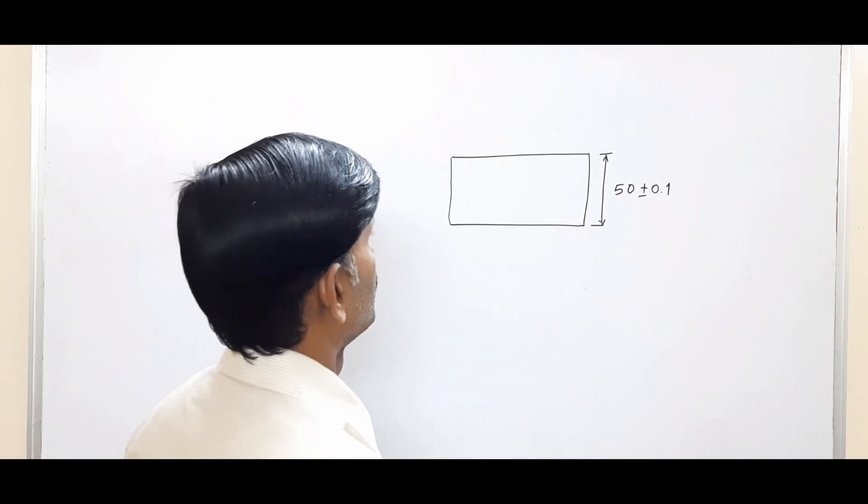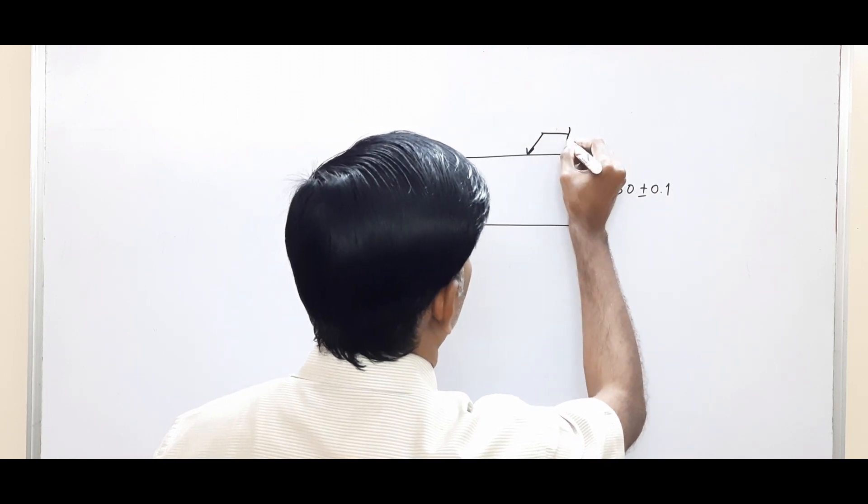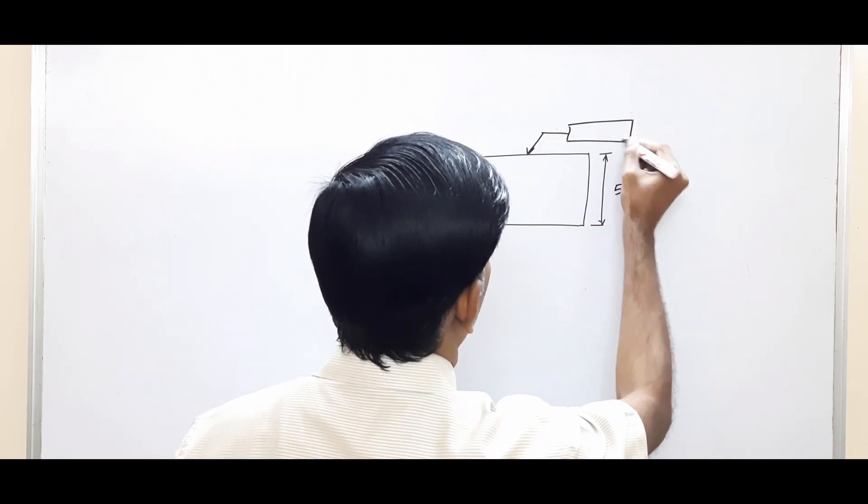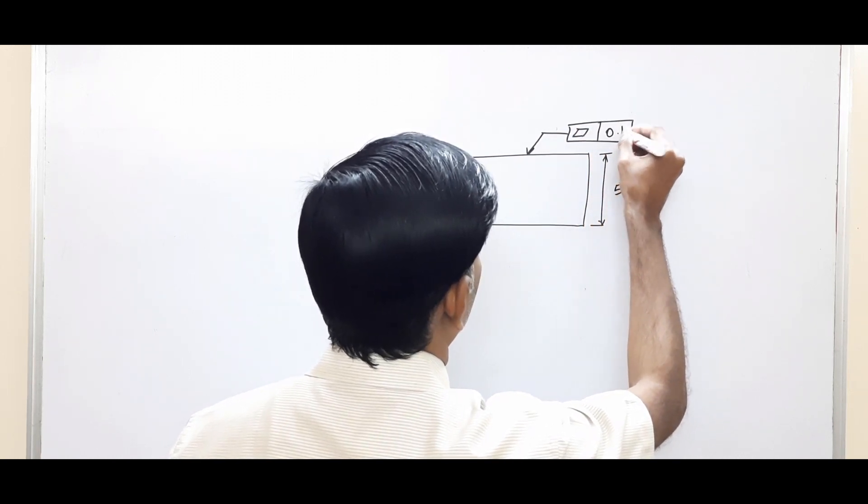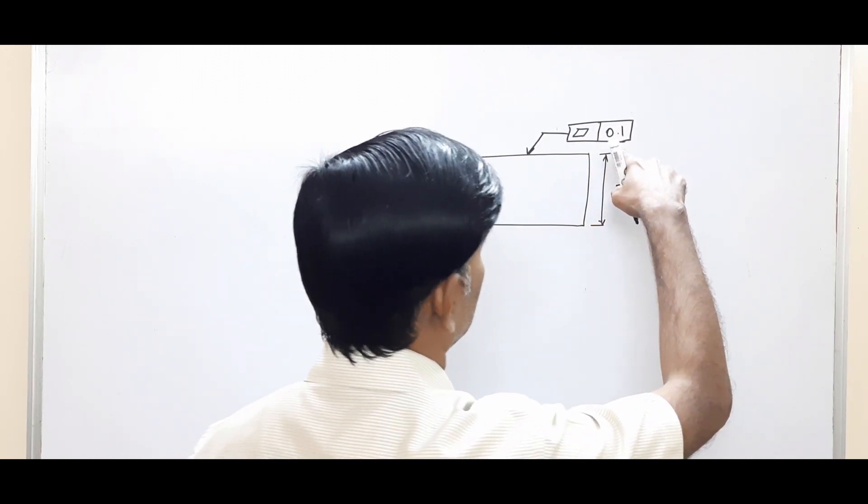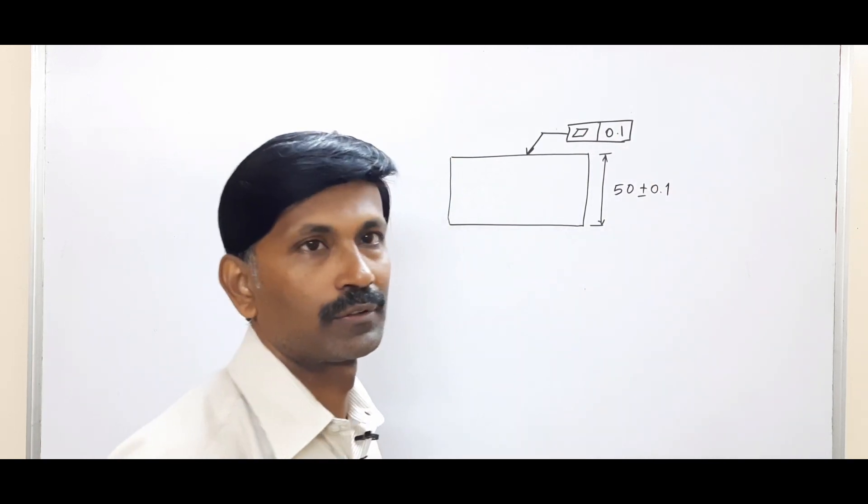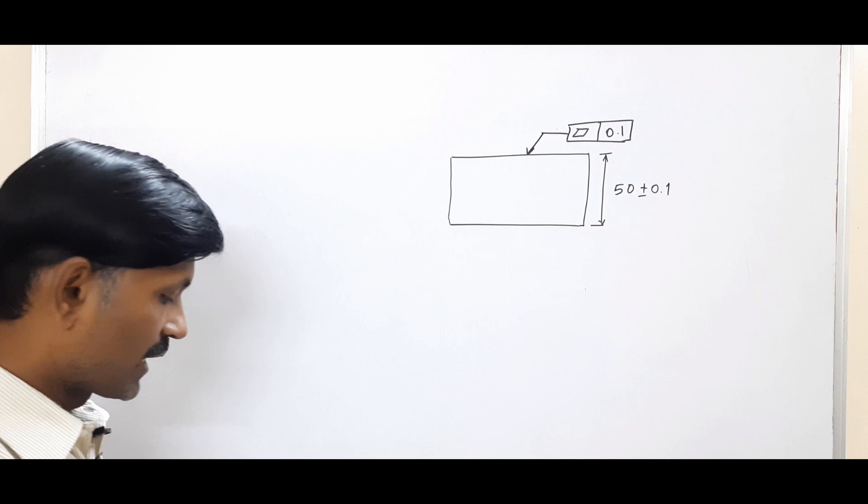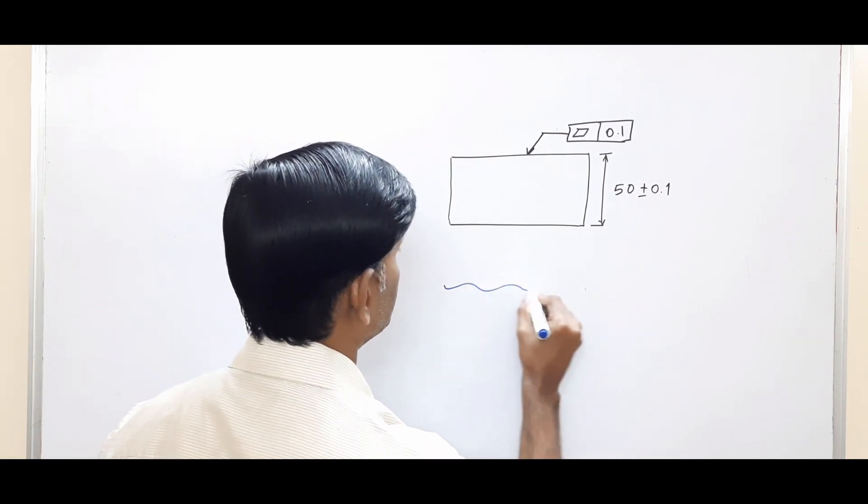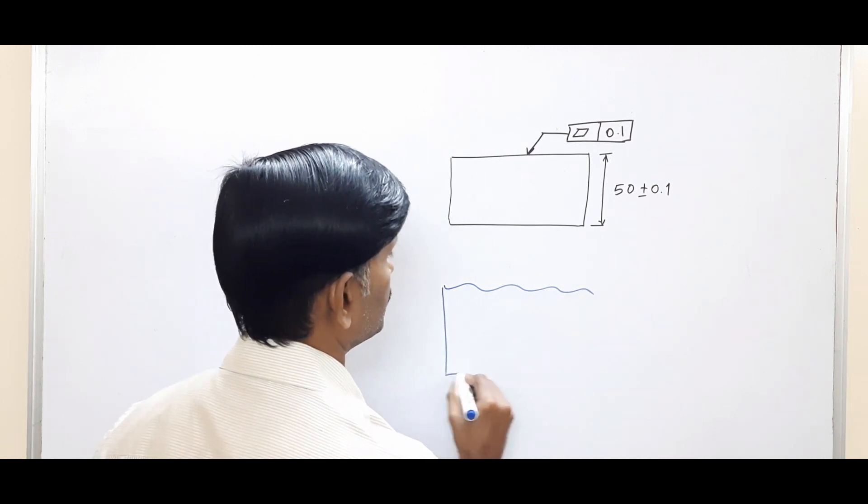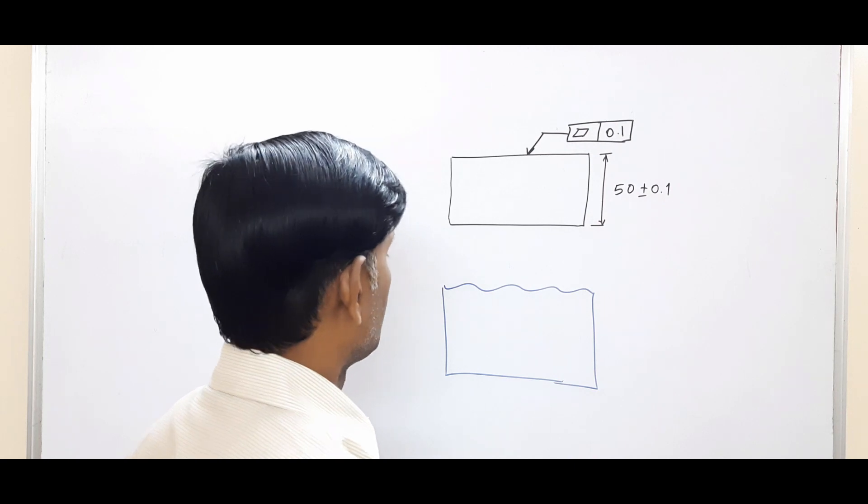So here the leader line must be pointing onto the surface which we want to control, and put a feature control frame with flatness symbol and value. Here again, this geometrical tolerance value, flatness value, must be less than the dimensional tolerance value. So after manufacturing we may end up with a part like this.